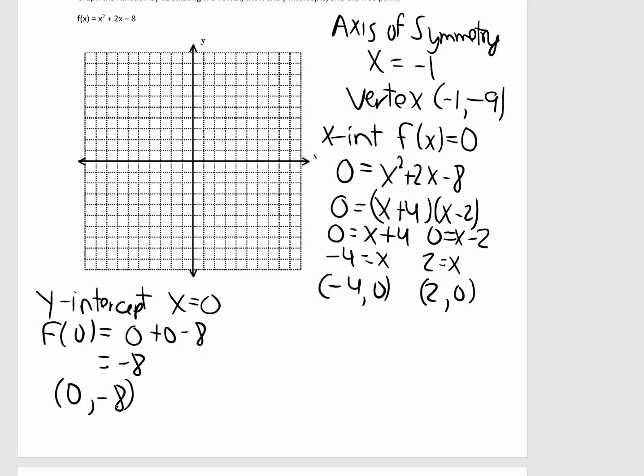So, let's plot the vertex and the intercepts on the coordinate plane. So, the points are in black, and I've also graphed the equation for the axis of symmetry in red.